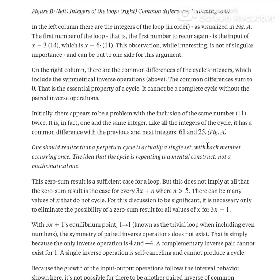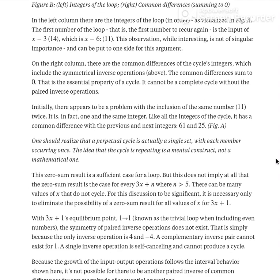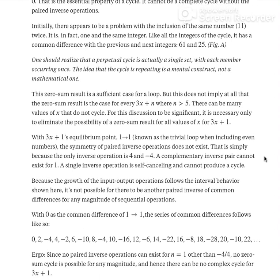We need to keep in mind that a pair of inverse operations do produce a cycle by this switching or crossing of the smaller pair and the greater pair. This just cannot take place with a single inverse pair. The operation is simply self-canceling and cannot produce a cycle. Because the growth of the input-output operation follows the internal behavior shown below, it's not possible for there to be another paired inverse of common differences for any magnitude of sequential operations.